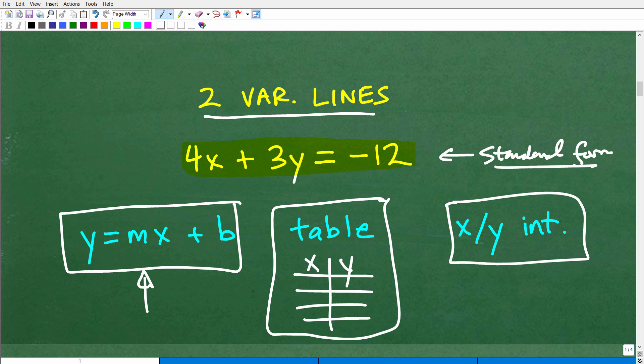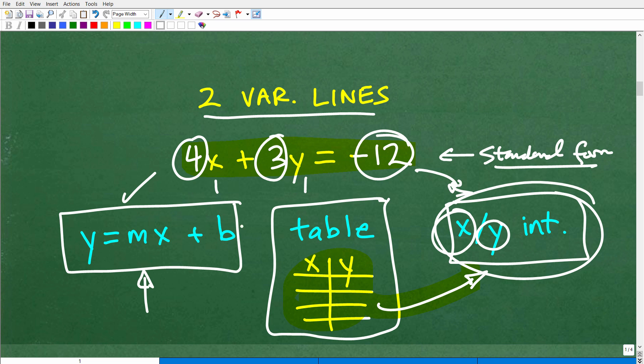Anytime you have a line in standard form, and basically what standard form is is where you have X and Y on one side of the equation equal to some number, and all these numbers are integer values, you want to go ahead and use the XY intercepts. And basically, the technique to use XY intercepts is like the easiest little table of values that you can use.